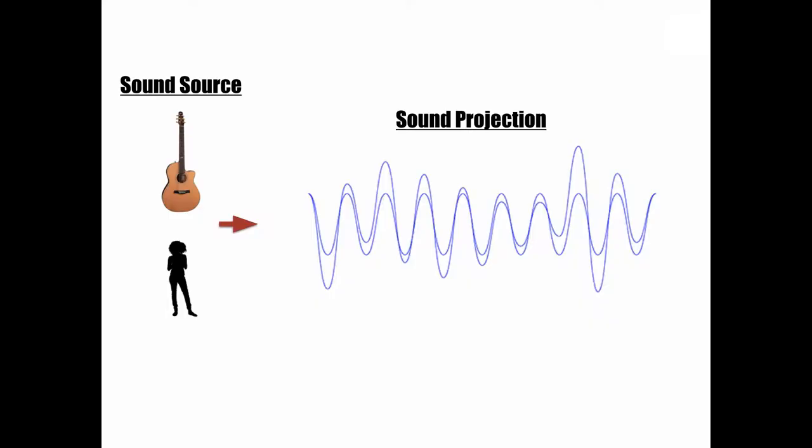Any signal flow chain starts at the sound source. This sound source, whether it be an acoustic instrument, a vocalist, or an electronically generated signal, projects a sound comprised of compressing and refracting molecules.